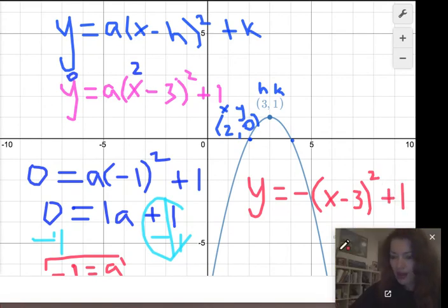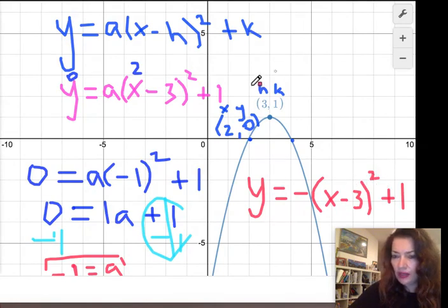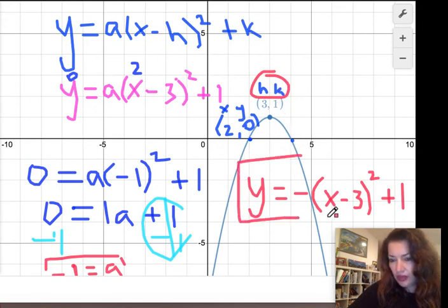Looking at the graph again, you can see that the h, k or your vertex is 3 comma 1 right here. The graph does point going downwards, and so this is our general equation right here.